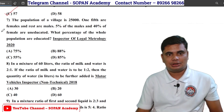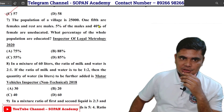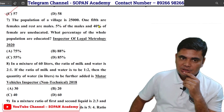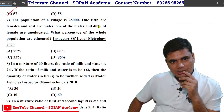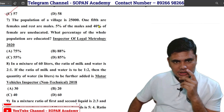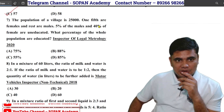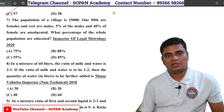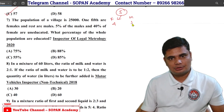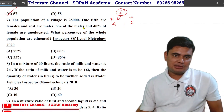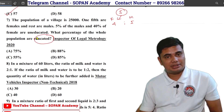The population of a village is 36,000. One-fifth are female, and the rest are male. 5% of the males and 40% of the females are uneducated. What percent of the whole population are educated? So this is how you can do it — total population 36,000. 5% males are uneducated, meaning 95% of males are educated. 40% females are uneducated, meaning 60% of females are educated.